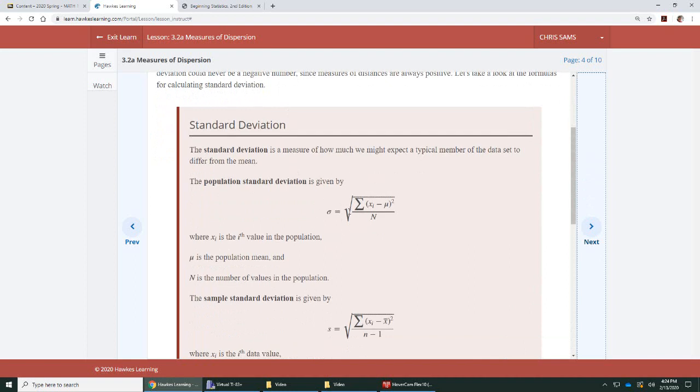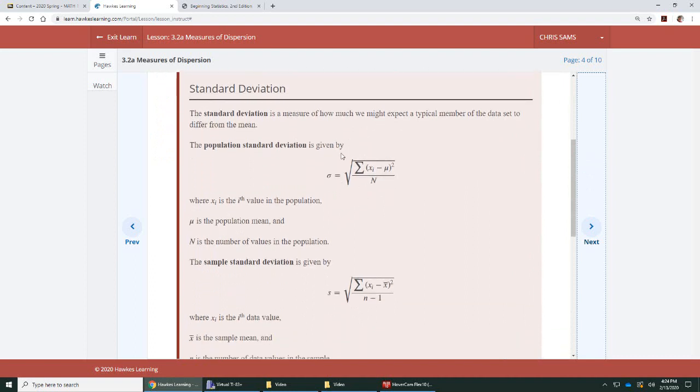This is the formulation for it. We will not be using this. We're going to use the calculator to compute it. But just to show you what it is, population is denoted by this little Greek letter sigma. You see the summation in there, which is adding everything up.